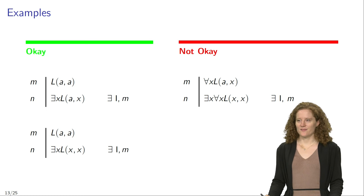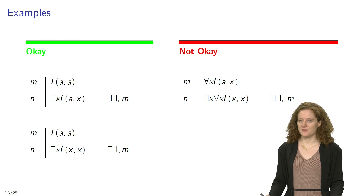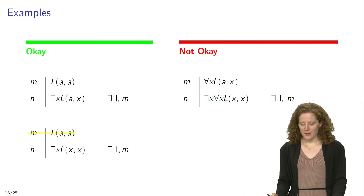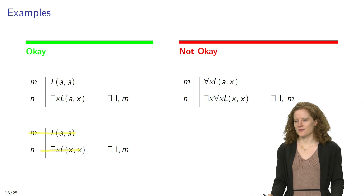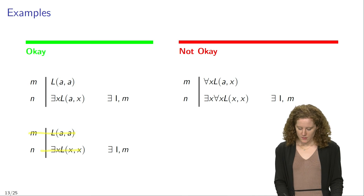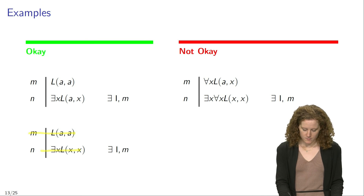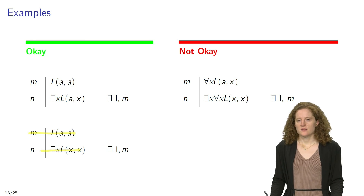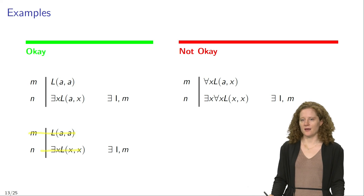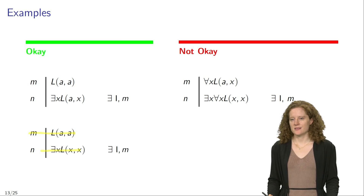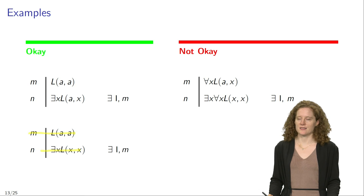Another good application of existential introduction is in the bottom left corner. Suppose that in line M we have the sentence LAA again. You may then infer that there is an X such that LXX, and justify this inference by means of existential introduction applied to line M. The main difference to the previous example is that here we have replaced both occurrences of the name A with the variable X. That is another good use of the rule existential introduction.